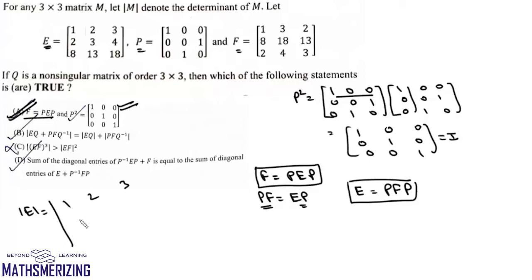If we look at the determinant of E, it is |1 2 3; 2 3 4; 8 13 18|. We subtract C3 - C2 to get |1 1 5; 2 1 5; 8 1 5|.